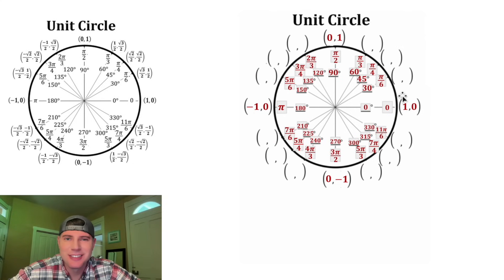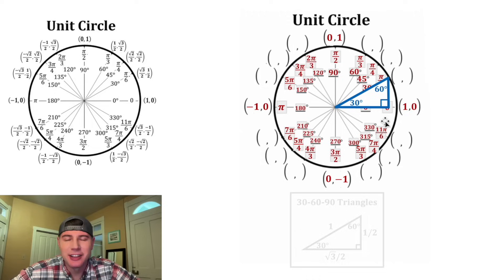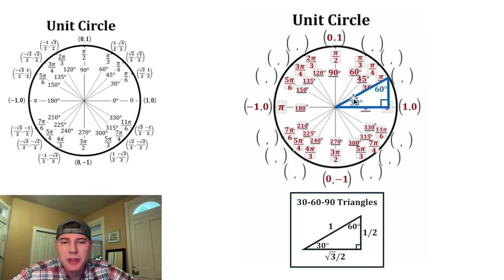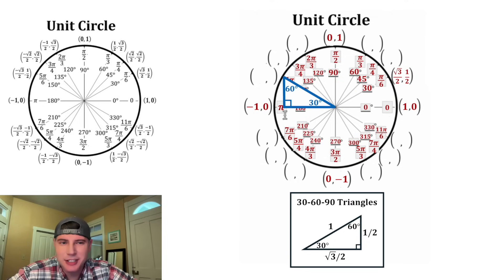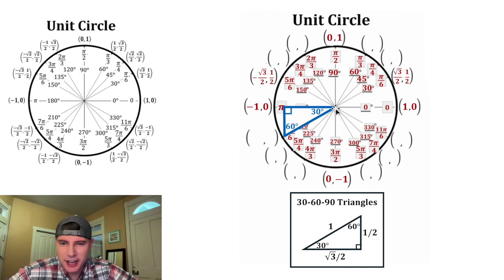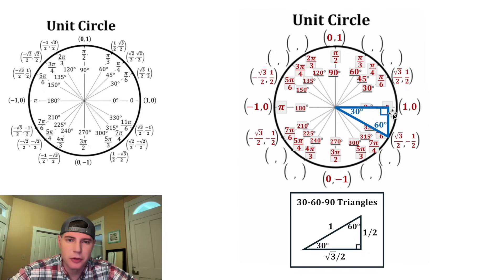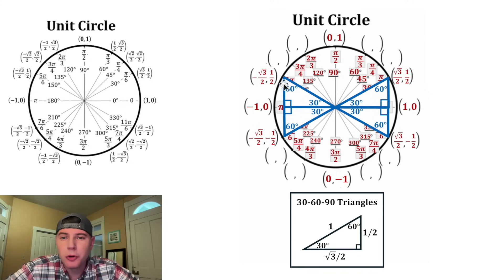Now let's talk about the rest of these. Let's draw this angle and make it a right triangle. Since this is 30 degrees, this is a 30-60-90 triangle. We want this side to be 1, so this side will be 1/2 and this side will be root 3 over 2. The x distance is root 3 over 2 and the y distance is 1/2. Doing the same for the other 30-60-90 triangles around the circle: going left gives x = -root 3 over 2, y = 1/2; the third has x = -root 3 over 2, y = -1/2; and the fourth has x = root 3 over 2, y = -1/2. These four coordinate points use a reference angle of 30 degrees.